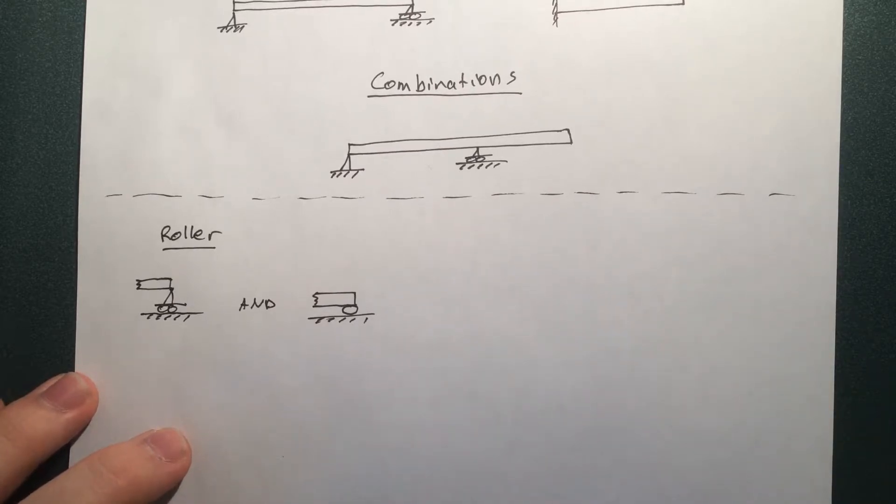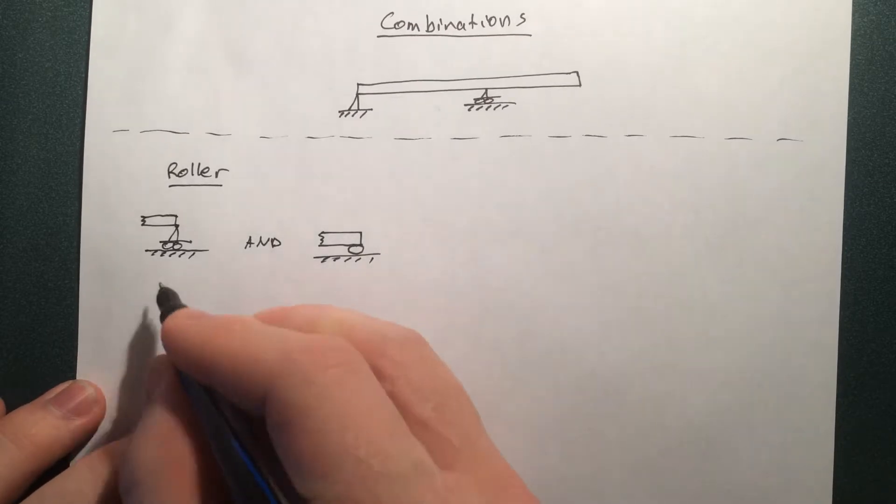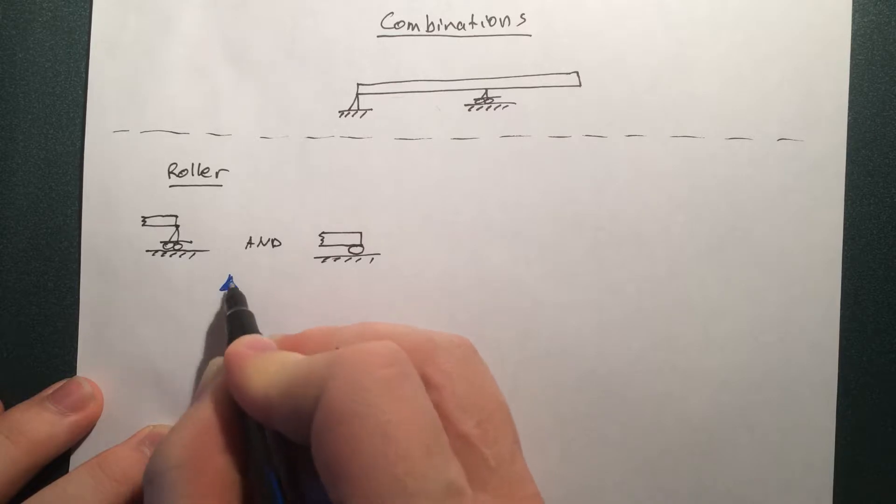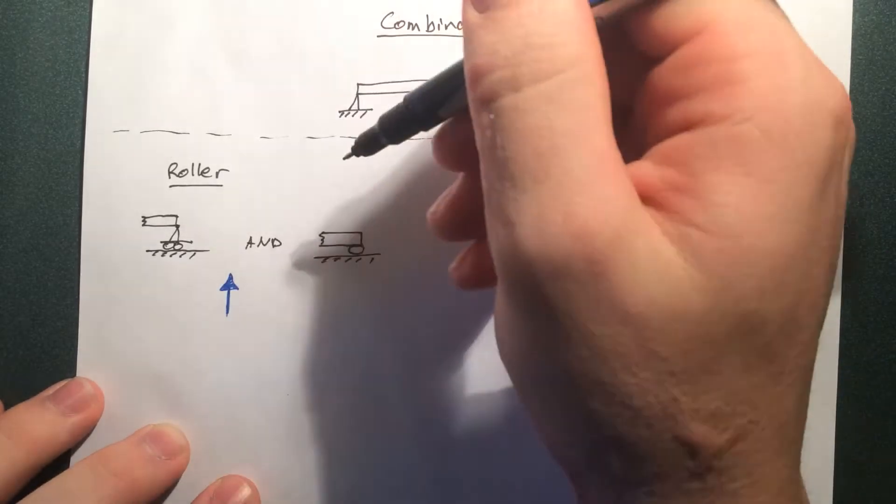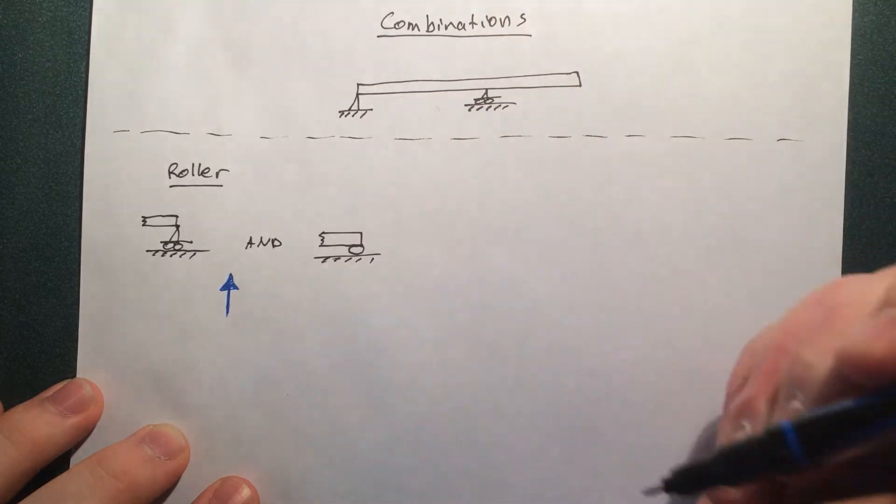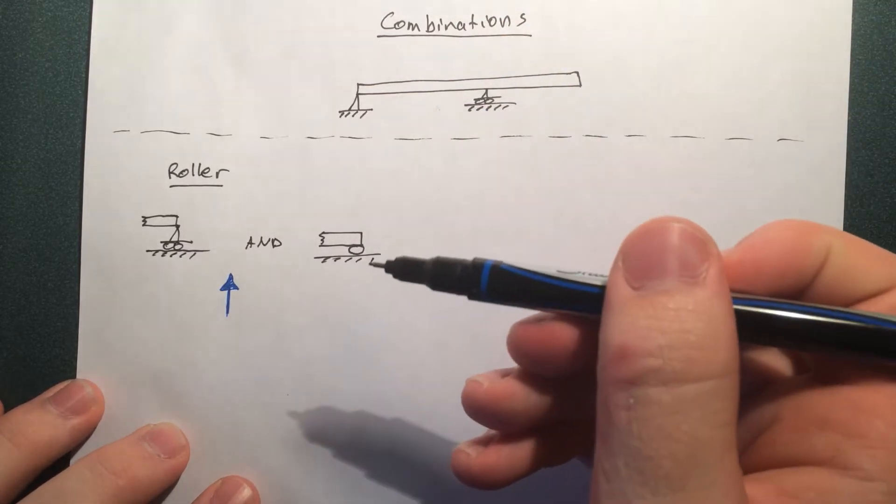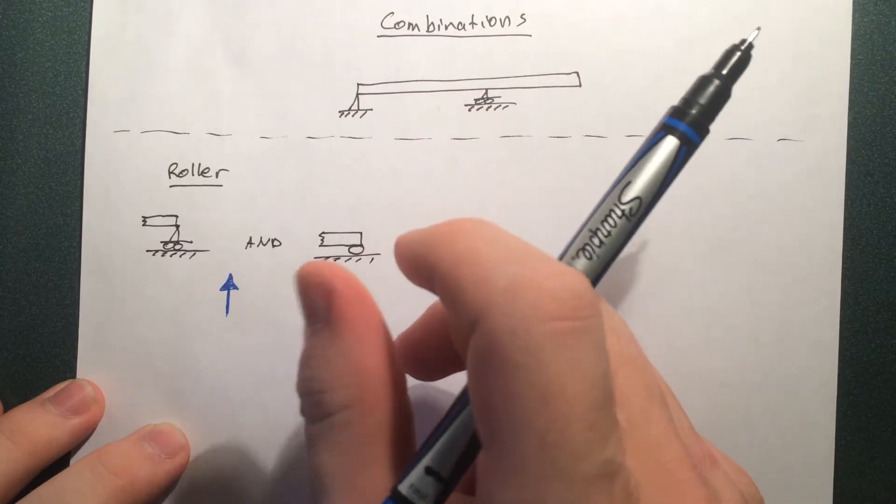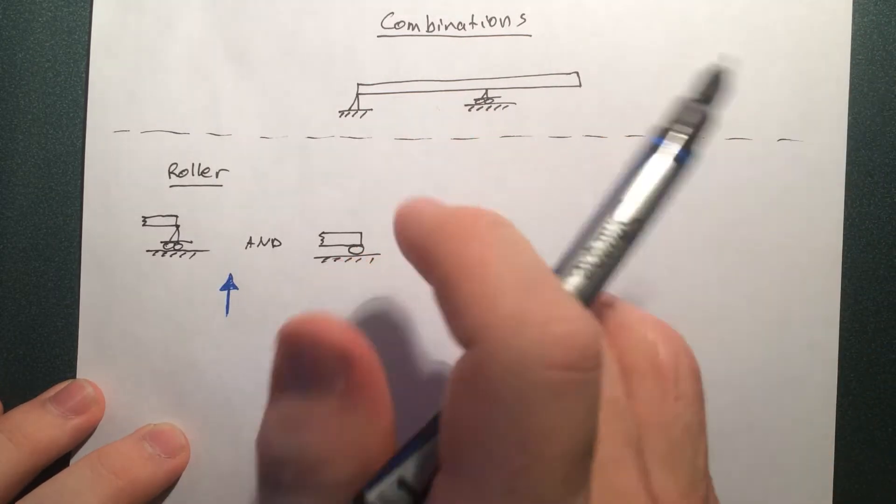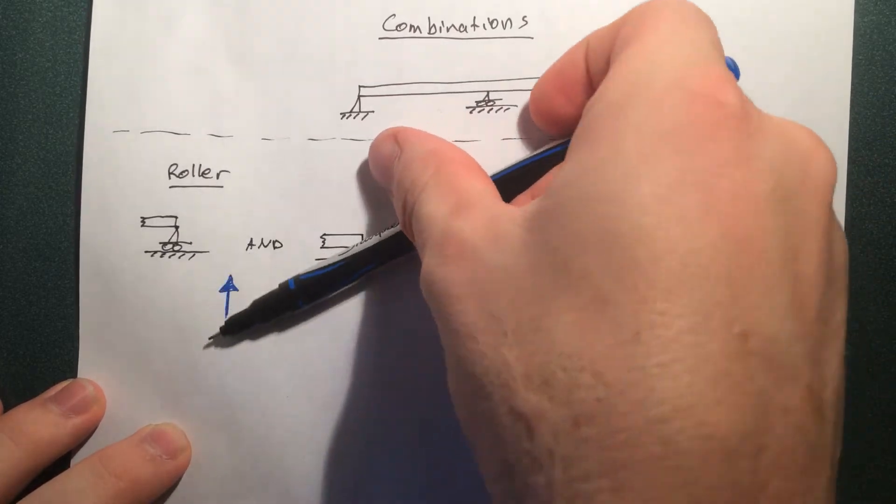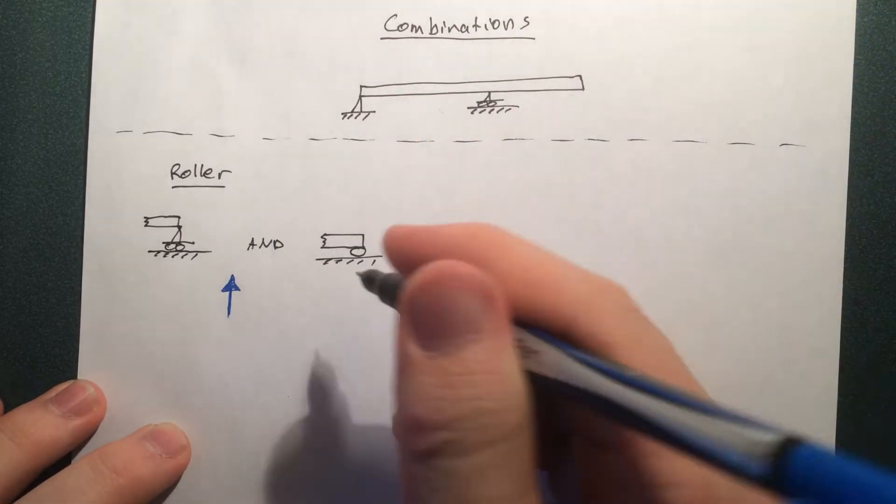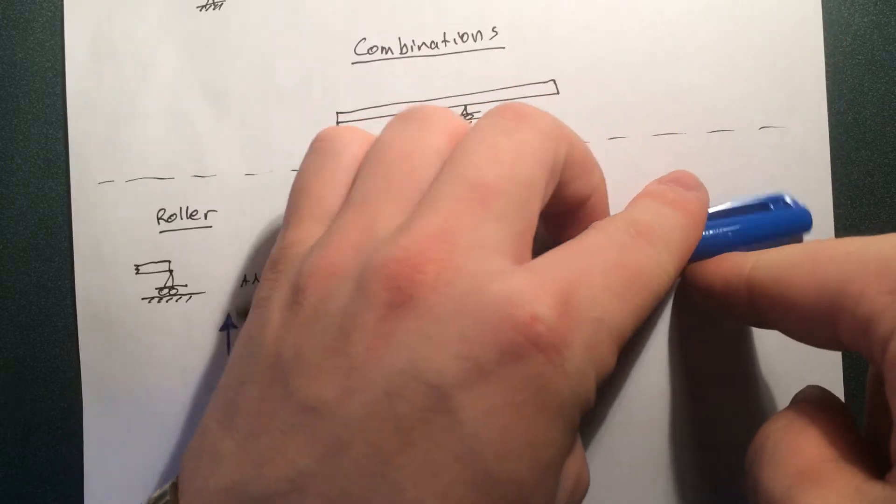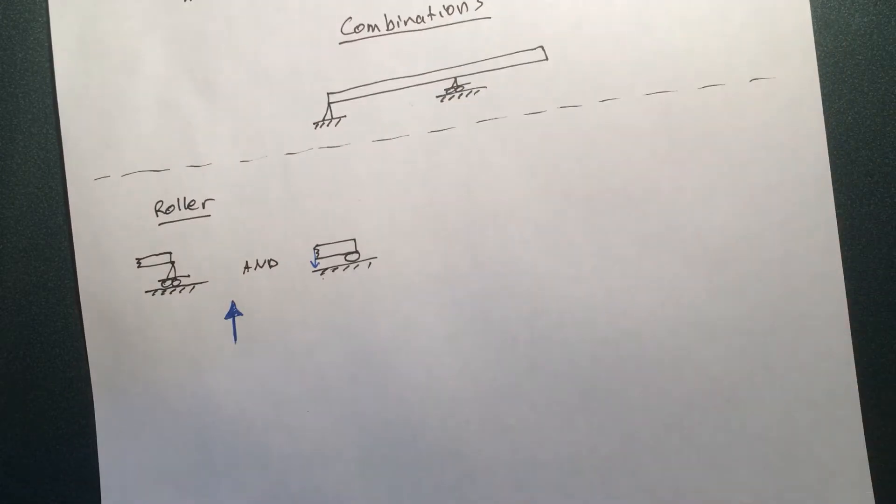And the key thing you need to know about this is that this support can only resist forces in the up and down directions. So you apply a load on it, the only way that this can resist is in a y direction. Because if you push a load in the x direction, it will just roll, so it can't resist anything. If we apply a moment, it's not going to do anything either because this beam is free to rotate on top of that thing. If I would take this end of the beam and yank it down, that beam would just roll over top. It's not really fixed.